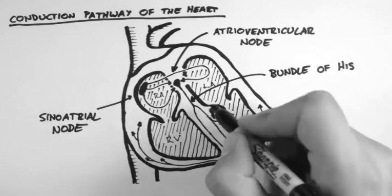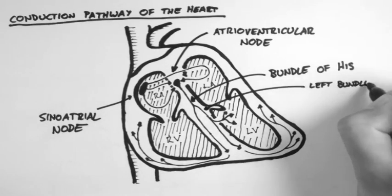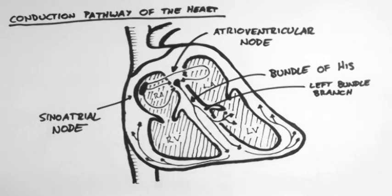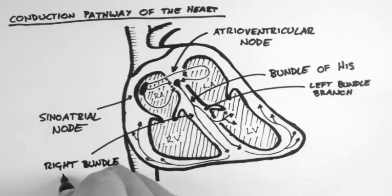The signal then splits and runs down the right and left bundle branches. The left is activated just before the right and this is important when we look at an ECG.